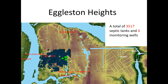This is the information for the Agglisten Heights neighborhood. In this video I'm going to only talk about one neighborhood — Agglisten Heights — because what we did is very similar for both neighborhoods, so I'll use Agglisten Heights as the example for demonstration. This neighborhood has a total of 3,517 septic tanks and there are four monitoring wells. This is a zoomed-in picture of the monitoring wells near Red Bay Branch and the associated ditches.